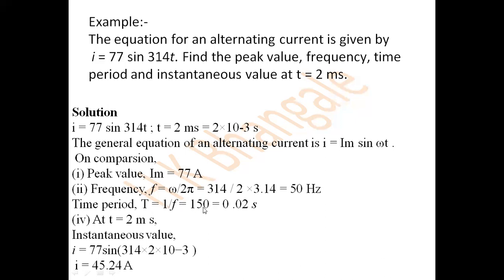Time period T = 1/f = 1/50 = 0.02 seconds, that is 20 milliseconds. Now at t = 2 milliseconds, we substitute into the equation to find the instantaneous value of current. Putting t = 2 ms into i = 77 sin(314t), the instantaneous value of the current is 45.24 ampere.